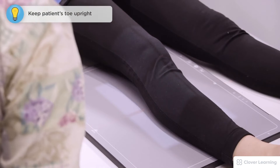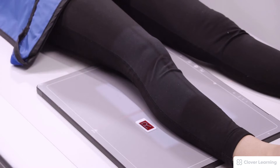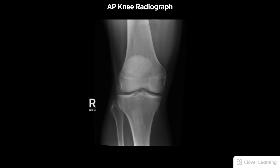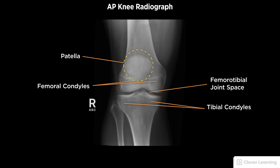Her toe must be upright. We're going to use a right marker in the field of view and the patient will hold very still while the exposure is taken. A diagnostic AP knee radiograph must be free of motion and rotation, demonstrating symmetric femoral and tibial condyles, the patella superimposed over the distal femur, an open femoral-tibial joint space, and proper visualization of soft tissue and bony detail.